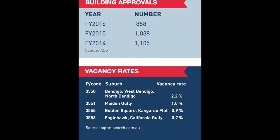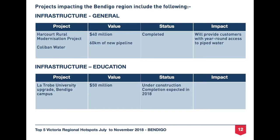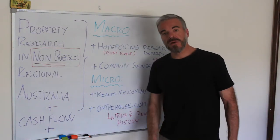Equally important, the reports provide a demographic breakdown and economic commentary for the area, as well as population growth and vacancy rates for each area. In the report you'll also find a suburb-by-suburb breakdown including volume of sales, growth, and median yields — very useful information. Last but not least, the report includes all infrastructure expenditure by government and private industry in the area.